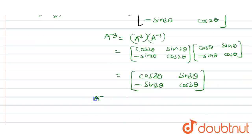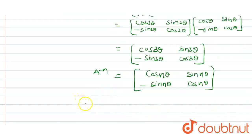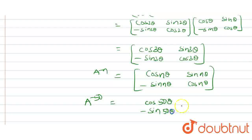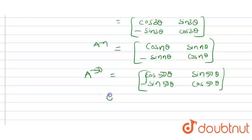By the pattern, A power minus n equals [[cos n*theta, -sin n*theta], [sin n*theta, cos n*theta]]. So A power minus 50 equals [[cos 50theta, -sin 50theta], [sin 50theta, cos 50theta]]. The question asks for A power minus 50 when theta equals pi by 12.